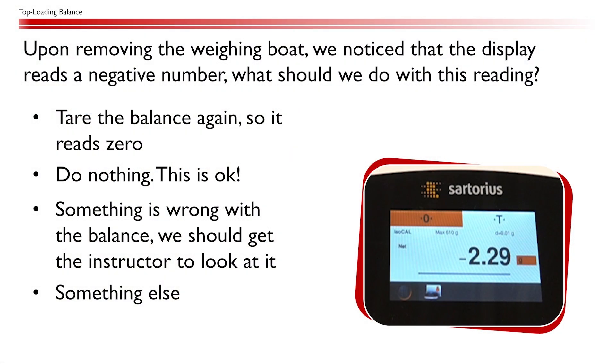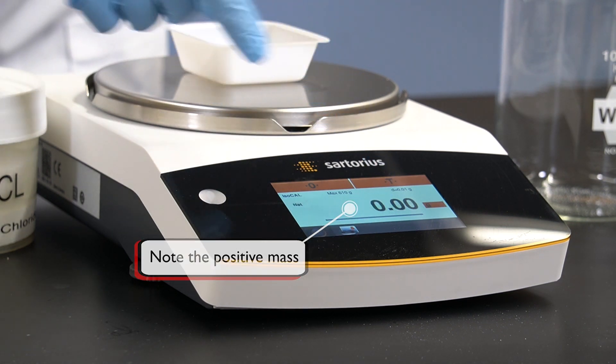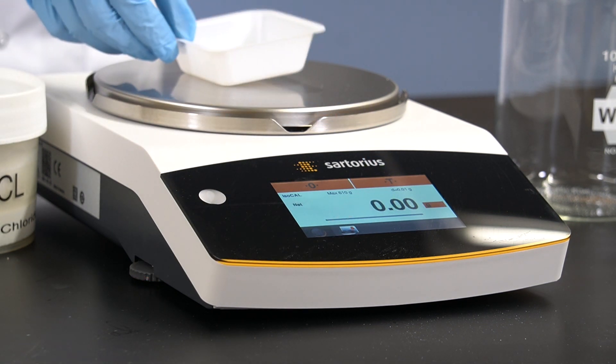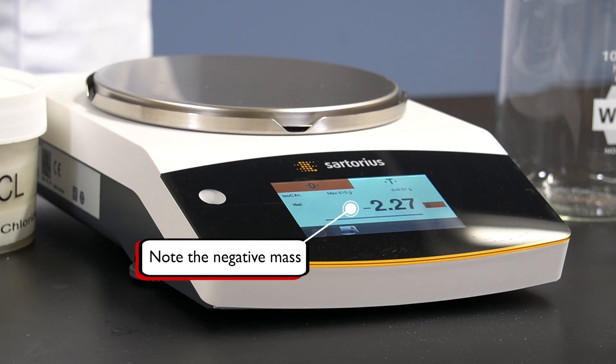Upon removing the boat, we notice that the display reads a negative number. What should we do with this reading? In the previous step, we tared the balance with the boat on top, so now that without the boat, the balance is measuring a lesser mass. This is why the balance reads a negative value at this point.